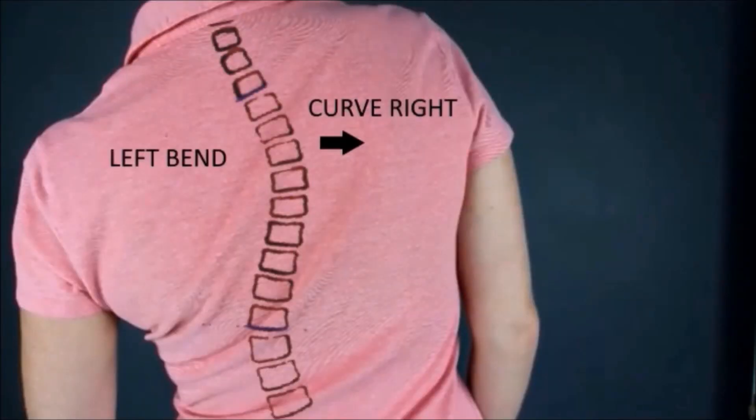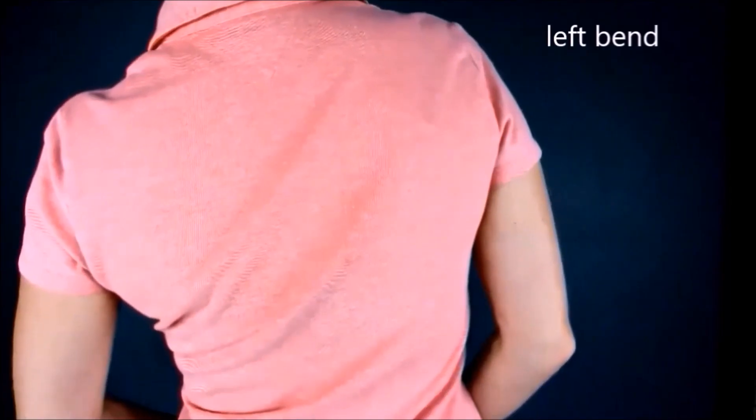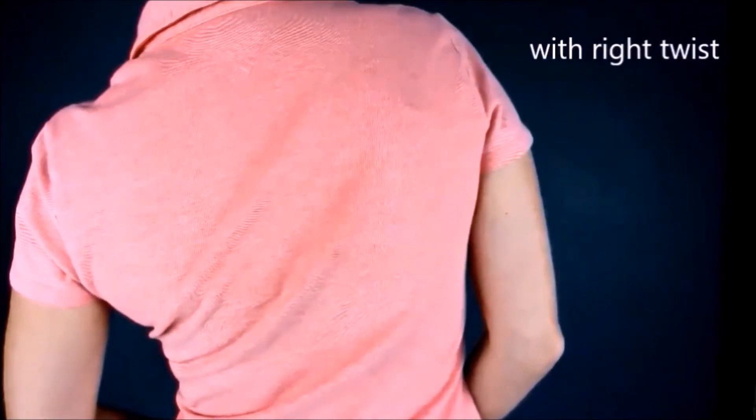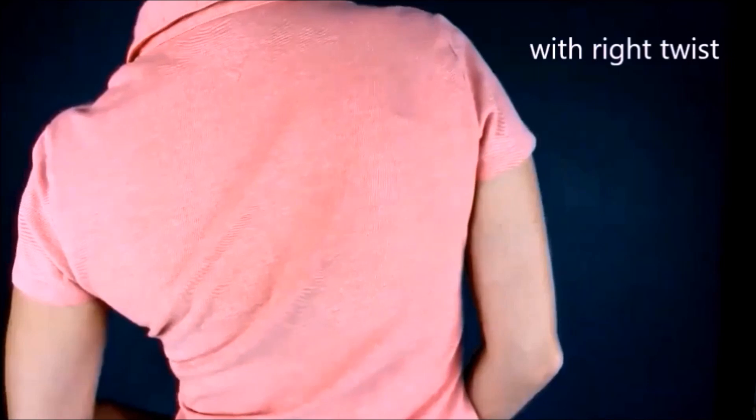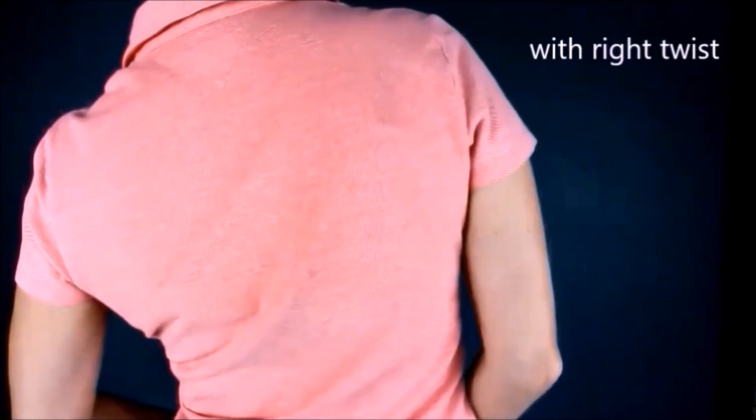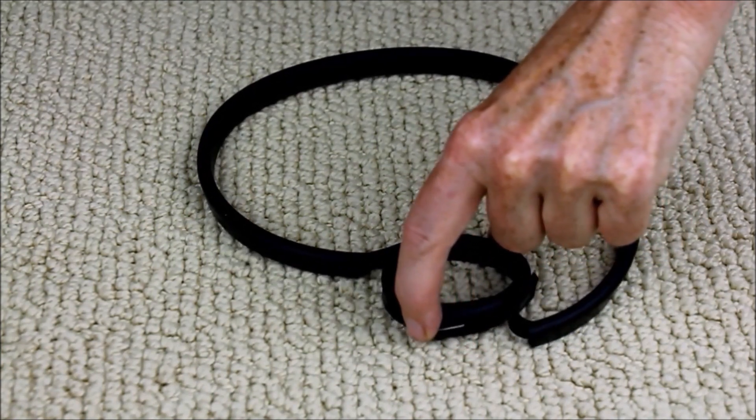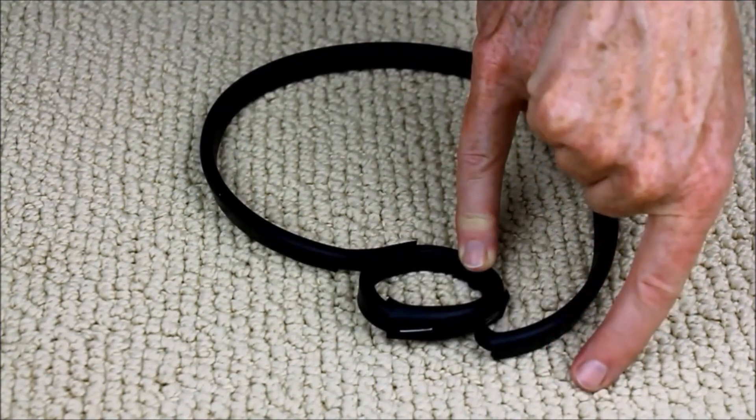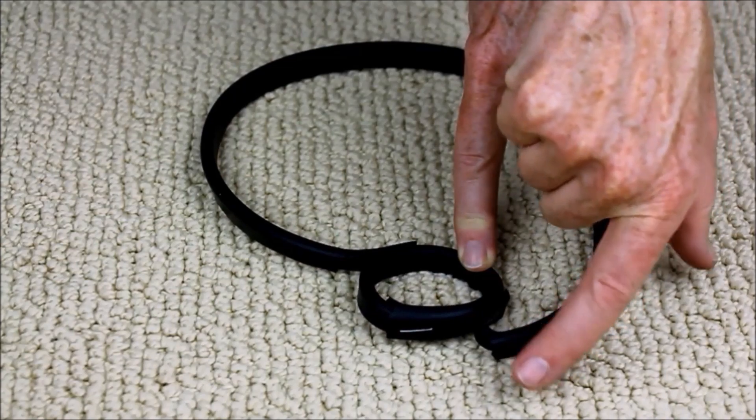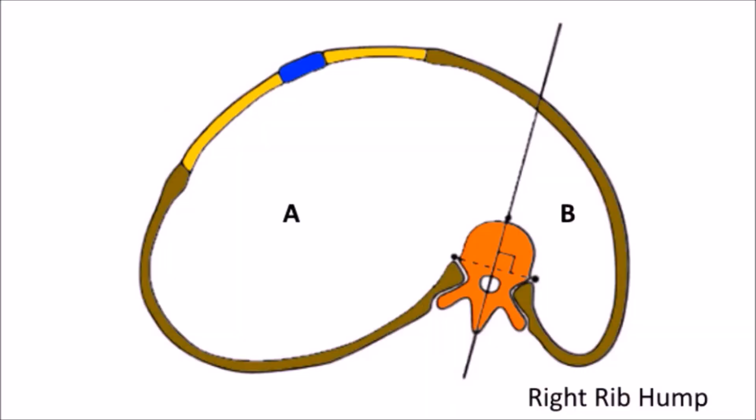Now, if you happen to have a thoracic scoliosis curving right, in other words, your left shoulder drops down, it's important to recognize the body's also twisting. So as you're bending left, the vertebra are also twisting you to the right or rotating right. Let's look what happens. When the vertebra rotates to the right, you get a rib hump on the same side at the back, just like that.